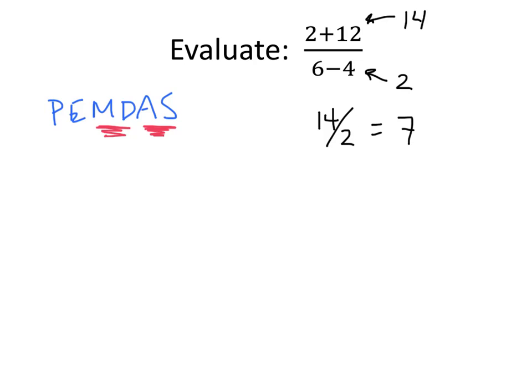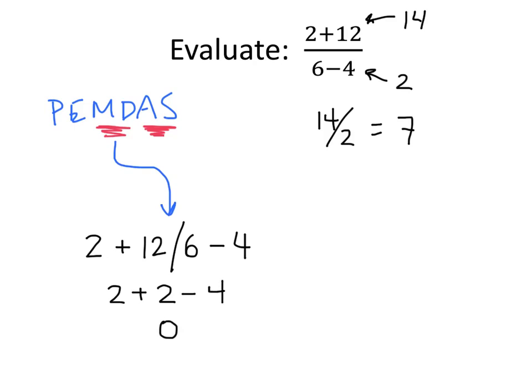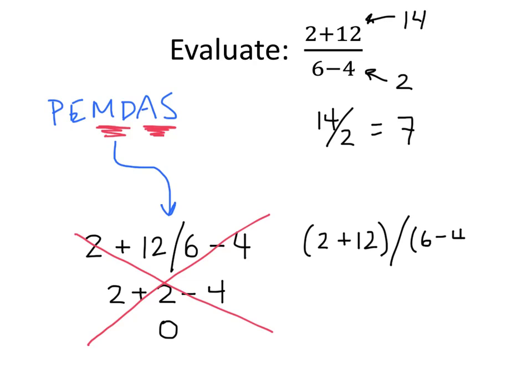We also have to be very careful when entering something like this on a calculator. If we're not thinking carefully and just type 2 plus 12 divided by 6 minus 4, the calculator applies the order of operations and doesn't know the top of the fraction was supposed to be 2 plus 12. The calculator will do 12 divided by 6 first, getting 2, leaving us with 2 plus 2 minus 4, which equals 0 — the wrong answer. So when we see a fraction with a complicated top and bottom, we must insert parentheses on the calculator for both, in order to get the correct answer of 7.